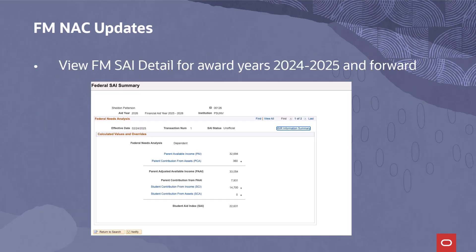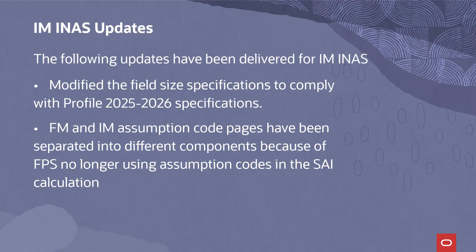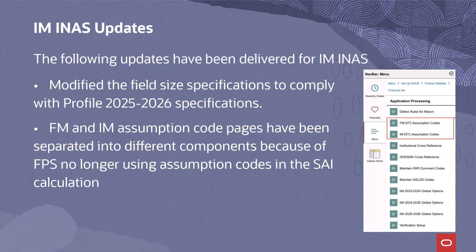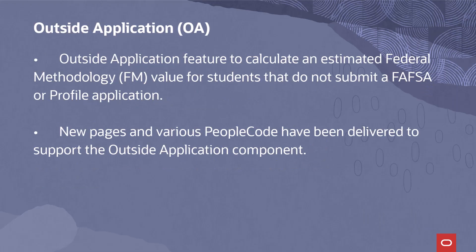View FM SAI detail is available for award years 2024-2025 and forward. For IAM iNAS, an update to modify the field size specifications to comply with profile 2025-2026 specifications has been delivered. FM and IAM assumption code pages have been separated into different components because SPS no longer uses assumption codes in the SAI calculation. We also delivered the outside application feature to provide institutions with a method to calculate an estimated federal methodology FM value for students that do not submit a FAFSA or profile application.